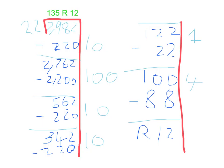Here I took away 220, and that was 10 22s. That left me with 2,762. Then I took away 2,200, and that was 100 22s.